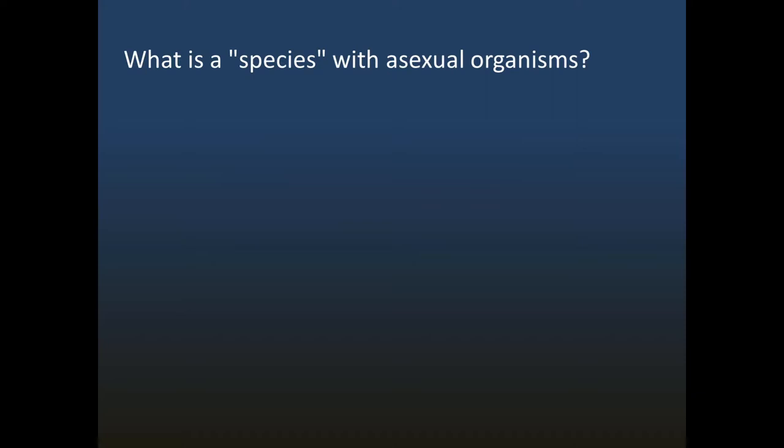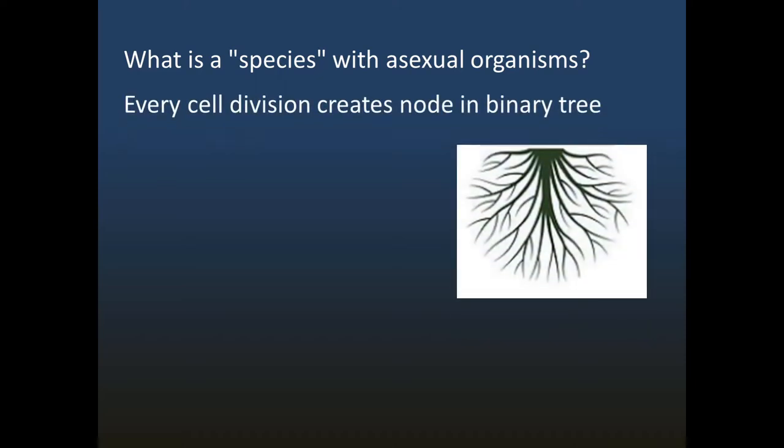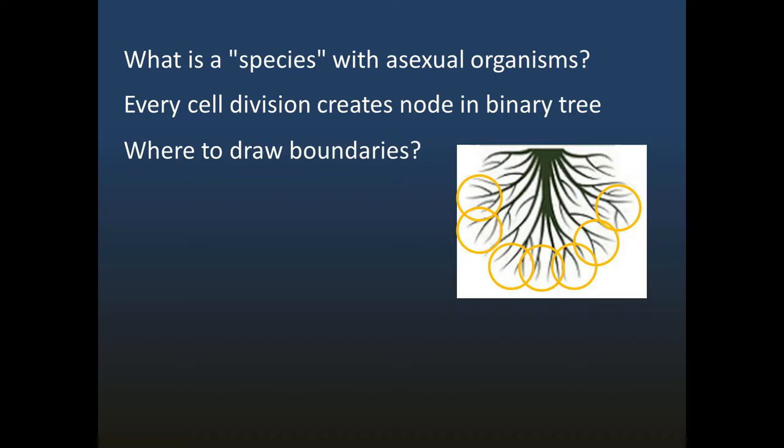With most animals and plants, species are naturally defined as a group that can breed. With asexual organisms, this definition does not apply. Every cell division potentially creates a node in the phylogenetic tree as mutations are introduced, and the leaves may be very dense and close together. This raises the question of where to draw boundaries around species and other ranks in the taxonomic hierarchy. There are some guidelines about how to do this. For example, if two strains have more than 97% identity in their 16S gene sequences, then this is sometimes taken as indicating that they should belong to the same species. But the boundaries between species and strains are often arbitrary and problematic.